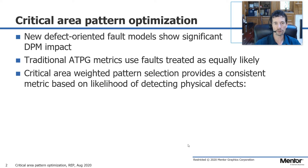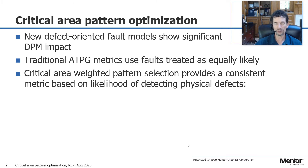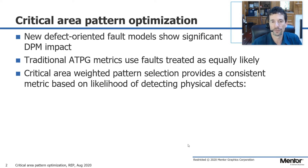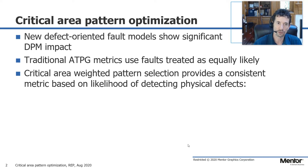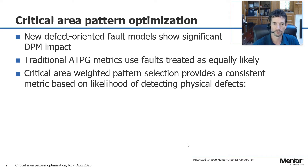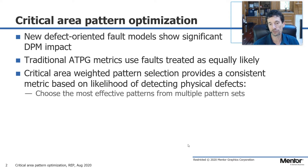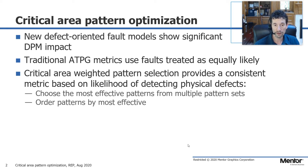What we're doing now is looking at critical area. Critical area is a way we can assess the likelihood of a particle or a physical defect causing the product not to operate correctly. Using critical area, we can look at faults detected by one pattern compared to another, and weight and sort those patterns based on the likelihood of those defects occurring. This lets us choose the most effective patterns from multiple pattern sets, ordered by most effective first.